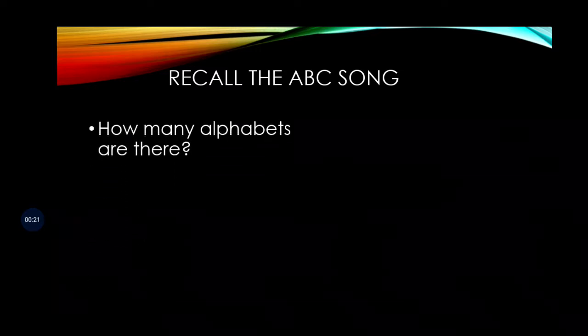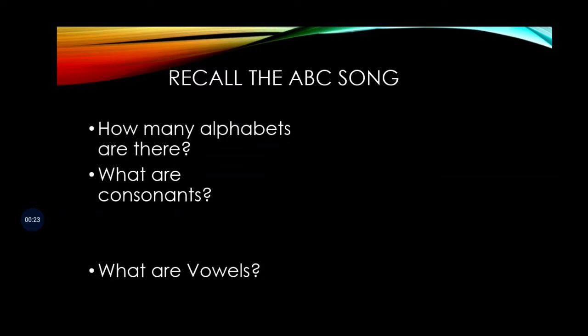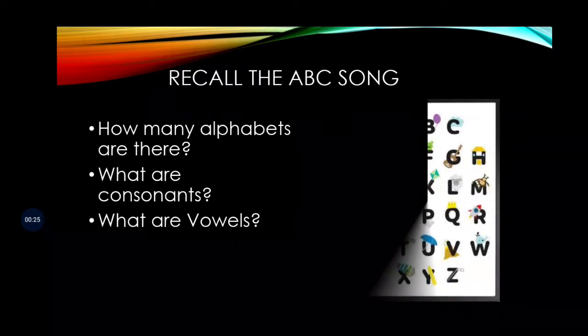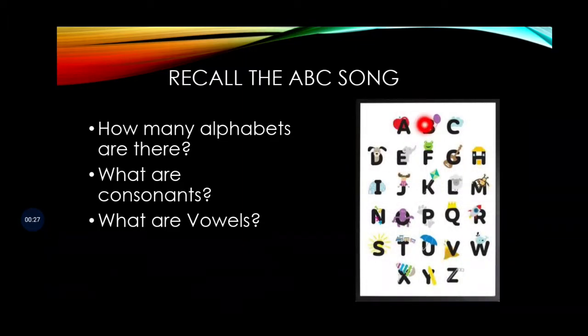Now if you recall the ABC song, how many alphabets are there? You can count over here: 1, 2, 3, 4, 5, 6, 7, 8, 9, 10, 11, 12, 13, 14, 15, 16, 17, 18, 19, 20, 21, 22, 23, 24, 25, 26. So we have 26 alphabets all together.